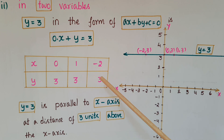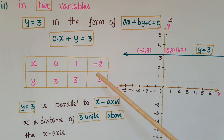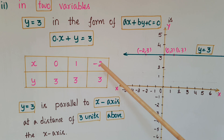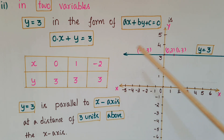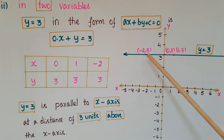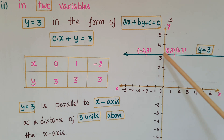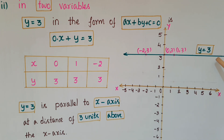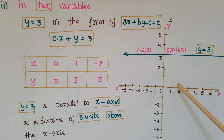If x is minus 2, y is 3. Here the y-coordinate is always 3, but the x-coordinate can be any real number. The points are (0, 3), (1, 3), and (−2, 3). Mark these points on the graph and join them — you will get a line. This is y equals 3, which is parallel to the x-axis at a distance of 3 units above it.